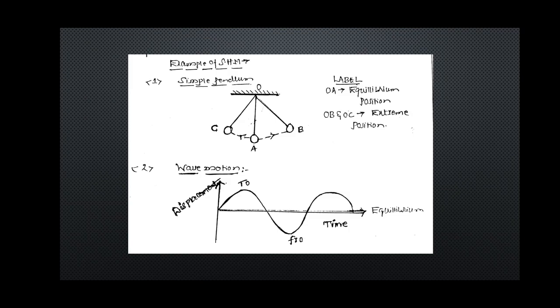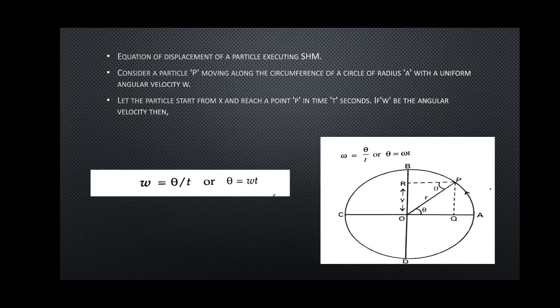Now let us discuss a very important question for five marks — many times asked in your examination: derive an equation for the displacement of a particle executing SHM. We need to find the formula for the displacement of a particle executing SHM. Observe the diagram: if a particle is moving in a circular path along the circumference of a circle, and we draw a perpendicular along the diameter AC and BD, particle P moves in a circular path.